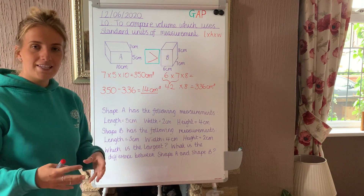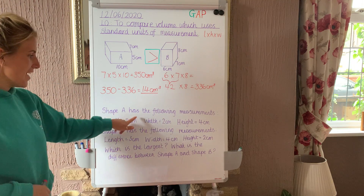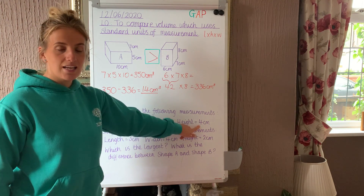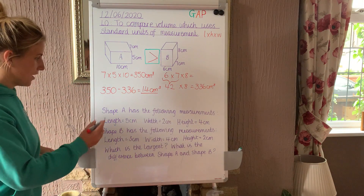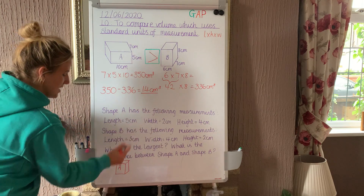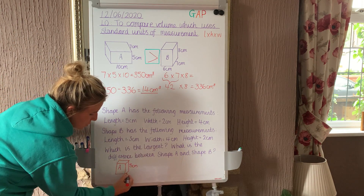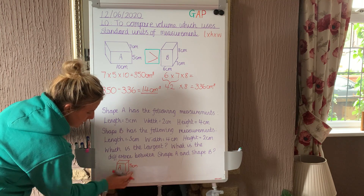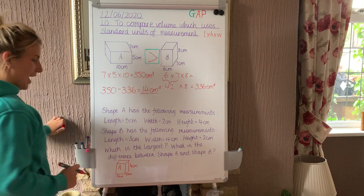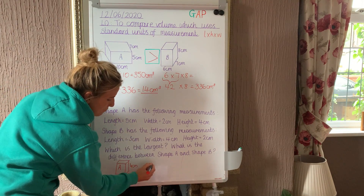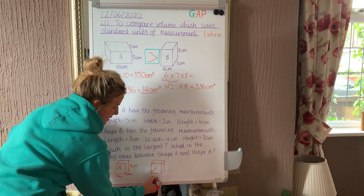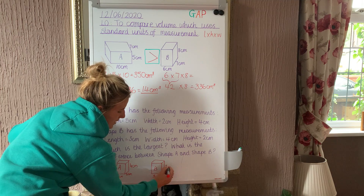Let's have a look at this together. Shape A has the following measurements: the length is 5 centimetres, the width is 2 centimetres, and the height is 4 centimetres. If you feel like you want to draw this to help you, then you can. Shape B has the following measurements: the length is 3 centimetres, the width is 4 centimetres, and the height is 2 centimetres.